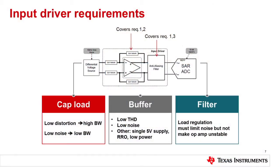For the buffer, we need low distortion and low noise — we're talking about 18 bits of resolution, so we need to keep the noise floor as low as possible. We also want single supply, possibly. Why? Because the ADC operates from a single supply — five volts — and we need to keep things as simple as possible rather than adding external power components. And then rail-to-rail output and low power, if possible.